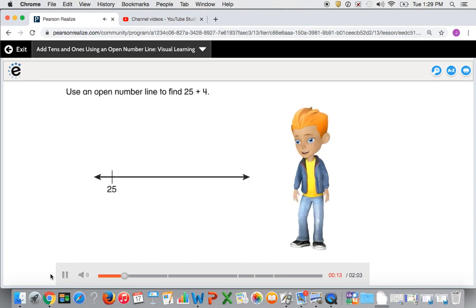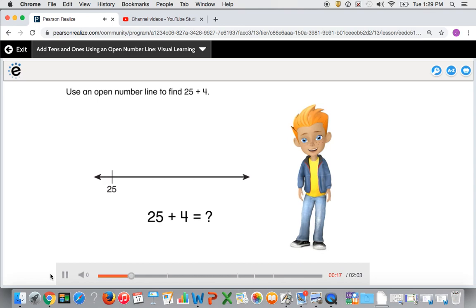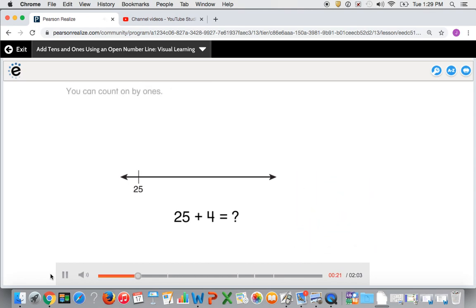Use an open number line to find 25 plus 4. You can count on by ones.